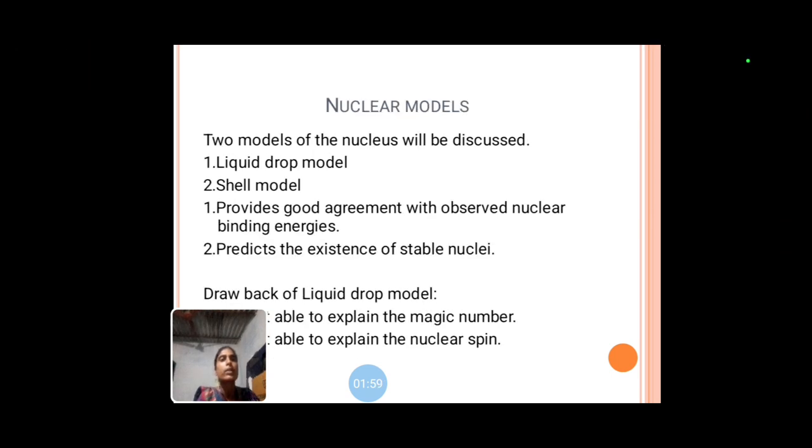Two models of the nucleus will be discussed: liquid drop model and shell model. Liquid drop model provides good agreement with observed nuclear binding energies. In liquid drop model, the forces acting in the nucleus are assumed to be analogous to the molecular forces in a droplet of liquid. This model was proposed by Niels Bohr, who observed certain marked similarities between an atomic nucleus and a liquid drop.